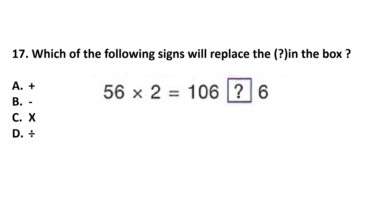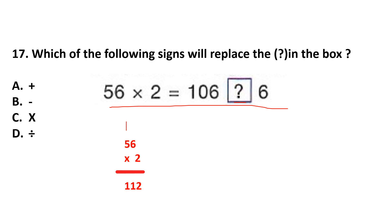Question number 17. Which of the following signs will replace the question mark in the box? First, 56 multiplied by 2 is 112. Now, which sign will replace the question mark? 106 plus 6 is 112. So the plus sign will come here. The answer is option A.